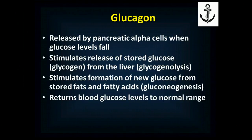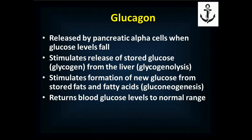Glucagon is released by alpha cells — not beta cells — when glucose levels fall. It causes the glycogen in the liver to break down, called glycogenolysis, and it also stimulates fat and fatty acids to make brand new sugar — a longer-term process called gluconeogenesis. This returns the blood glucose levels up to the normal range.